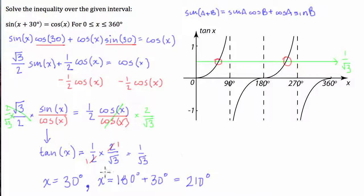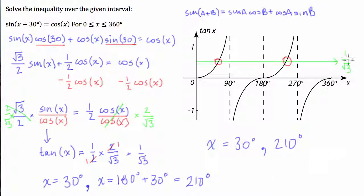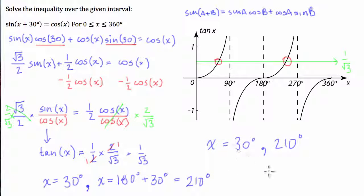That gives us both solutions — there are no other solutions on this domain. Our final answer is x equals 30 degrees, 210 degrees. There are quite a few tricks along the way, like recognizing tan of x and knowing exact values of trigonometric functions, but once you've got those, it's not too complicated and most questions are basically the same. Hope that helped — see you next time.